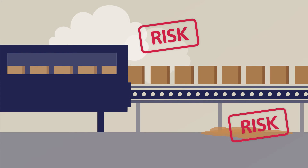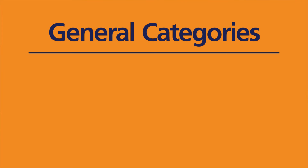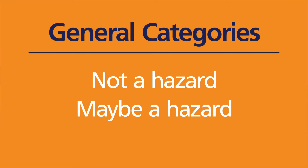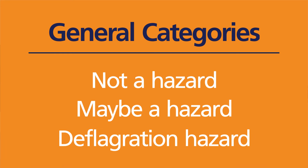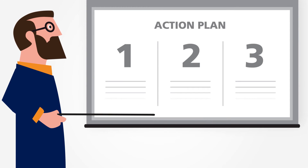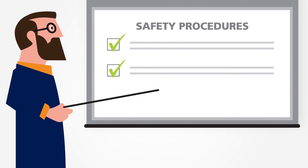Your DHA should group all locations in your facility into three general categories: not a hazard, may be a hazard, and deflagration hazard. This will help you prioritize the management of hazards, educate workers about those hazards, and create safe, proper procedures and train workers on how to follow them.